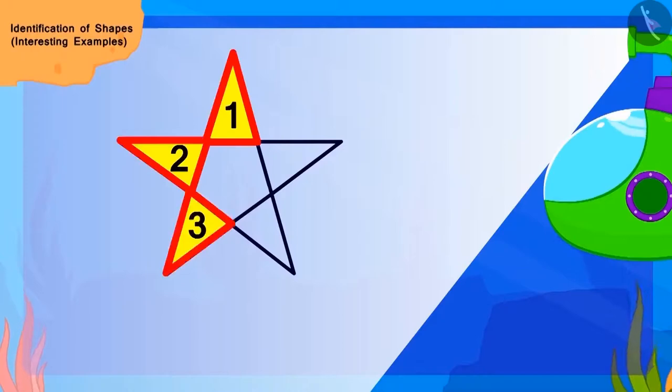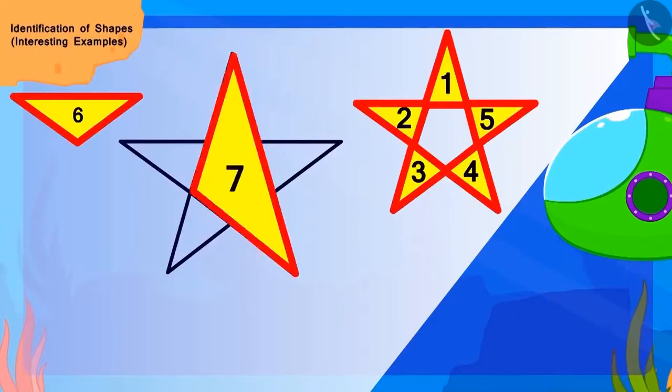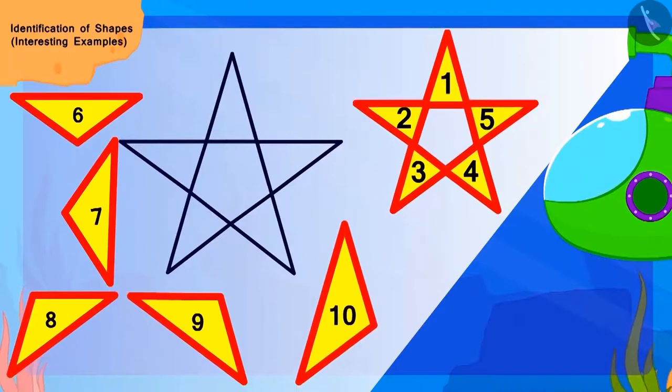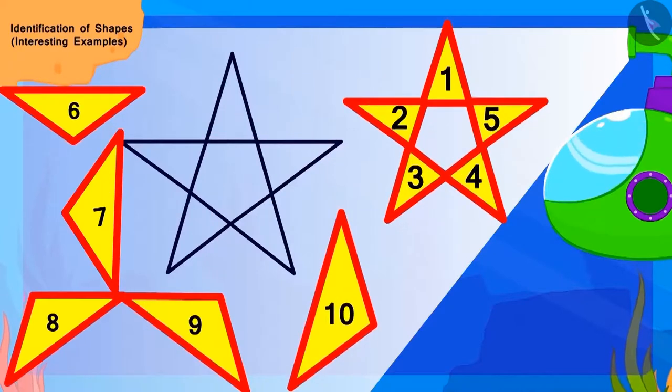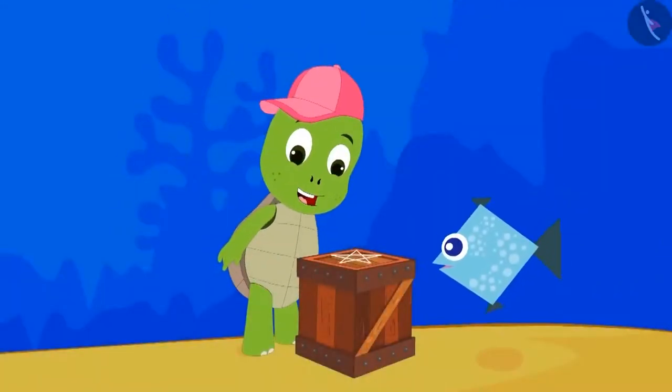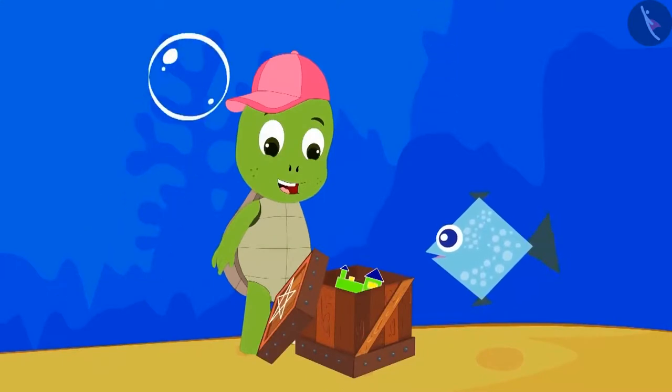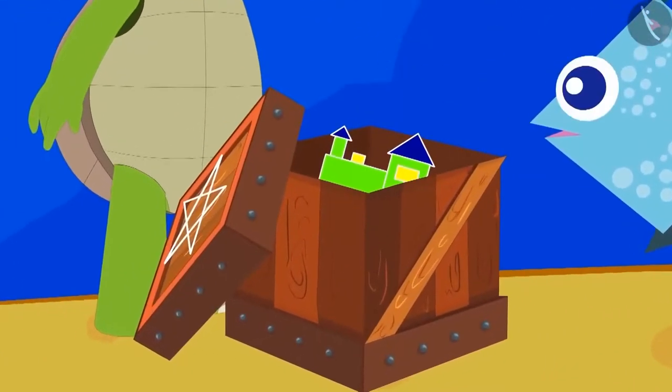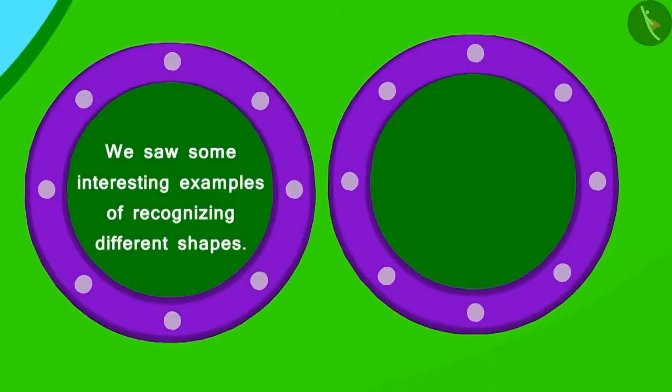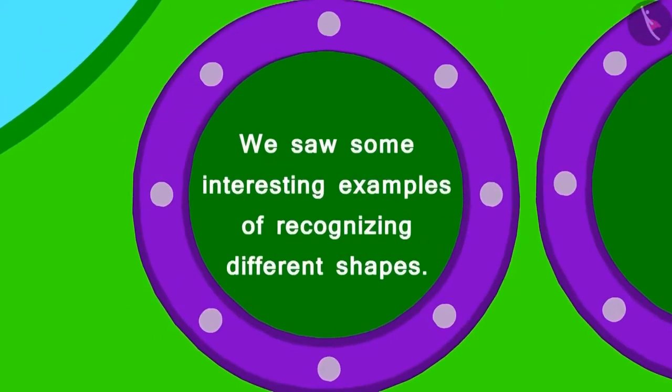Children, to find out how many triangles are there in this pattern made on the box, we will find out this way. Yes, there are a total of ten triangles here. Now, the fish opened the box and returned Tufan's toy. Children, in this lesson, we saw some interesting examples of recognizing different shapes.